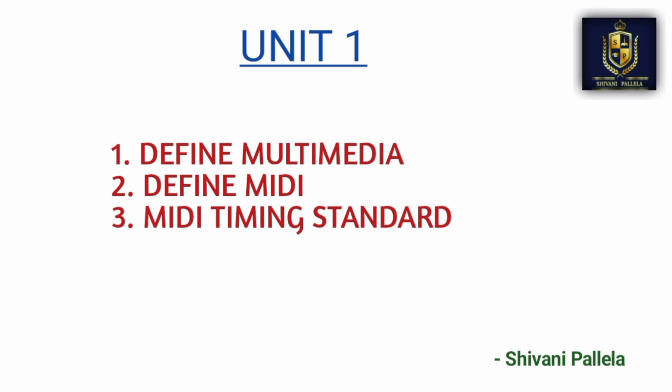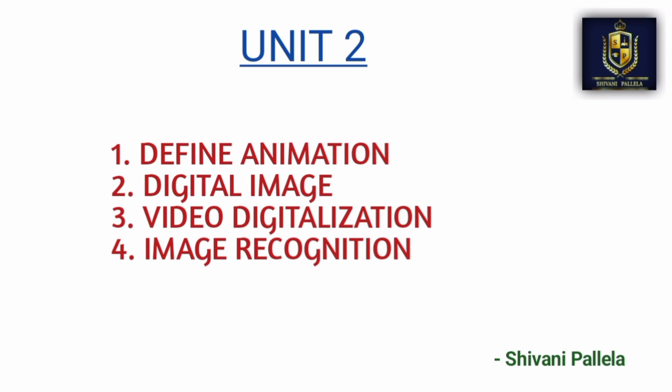With a 2-hour duration, spend one and a half hours writing all Part B questions first, then donate the remaining half hour to Part A. For Unit 1 short questions, three questions with five to six lines each is enough. For Unit 2, topics like animation, digital image, video digitalization, and image recognition are already covered in long questions, so no need to study them again separately.